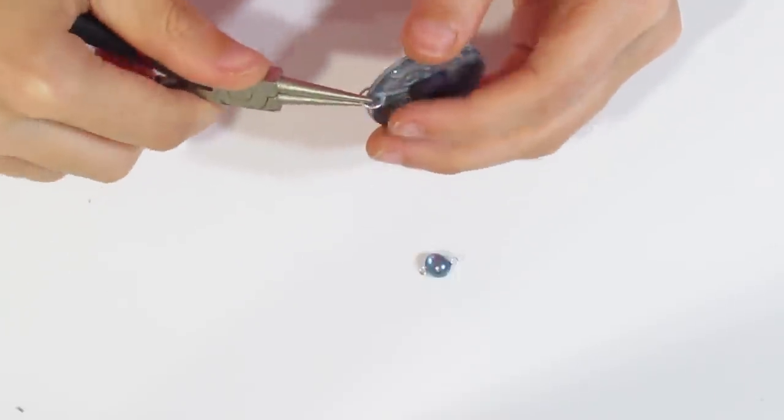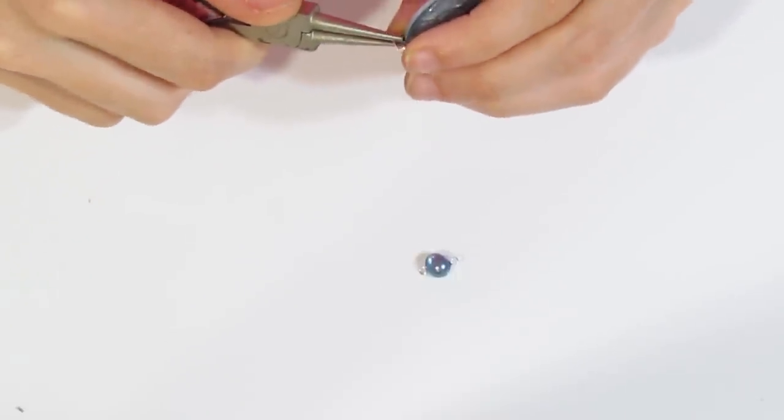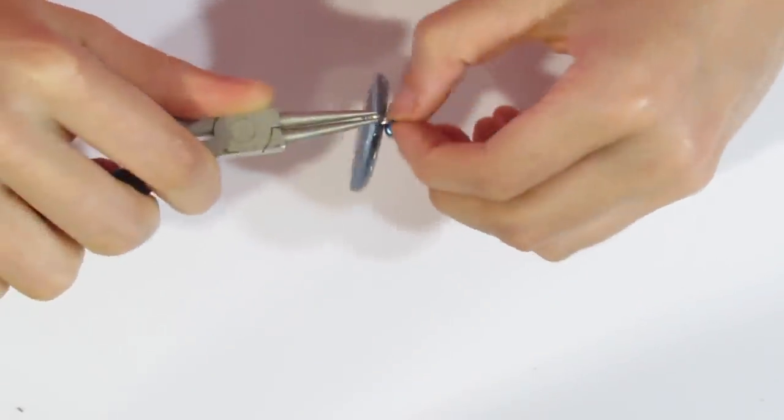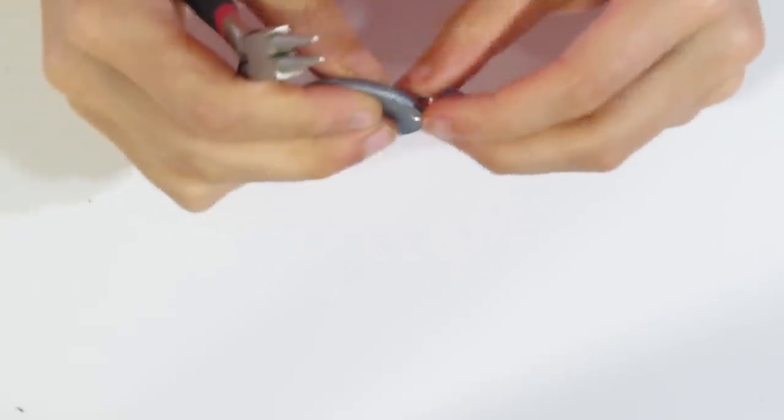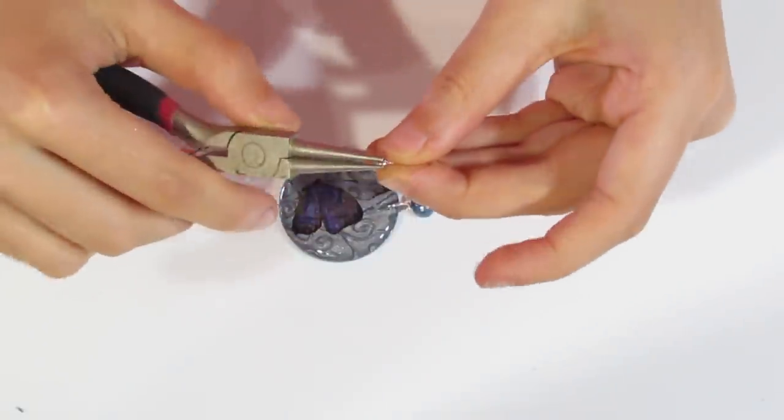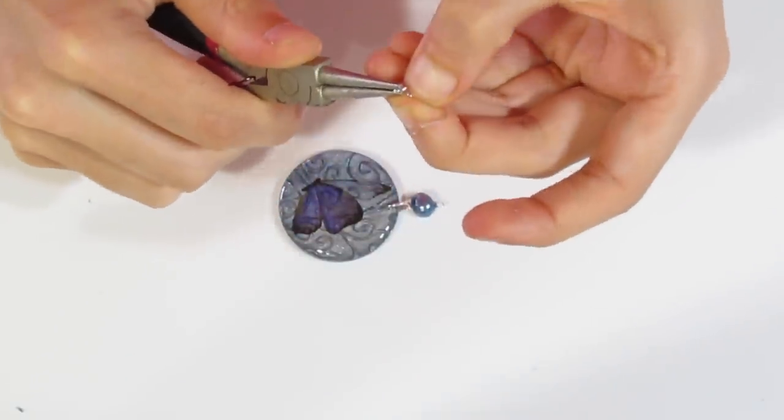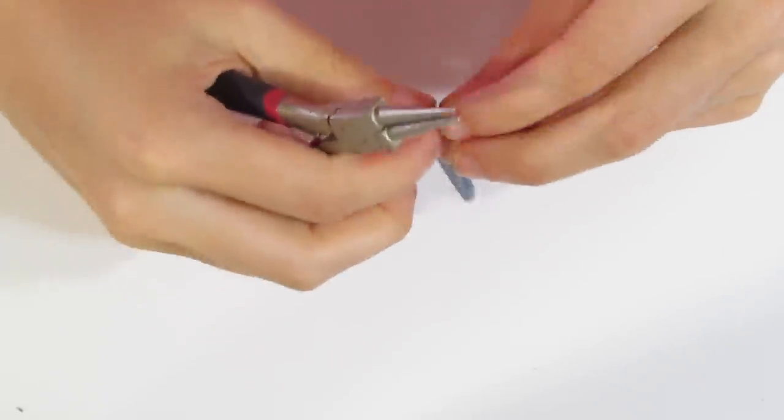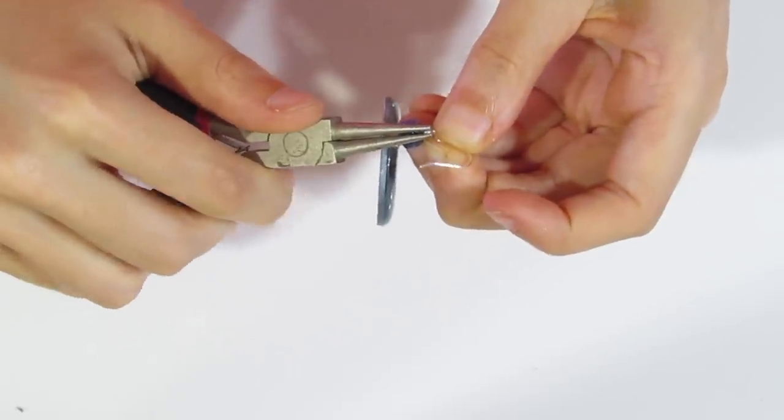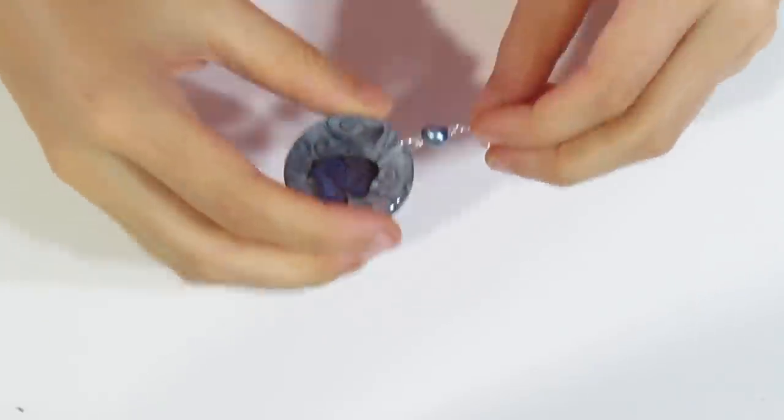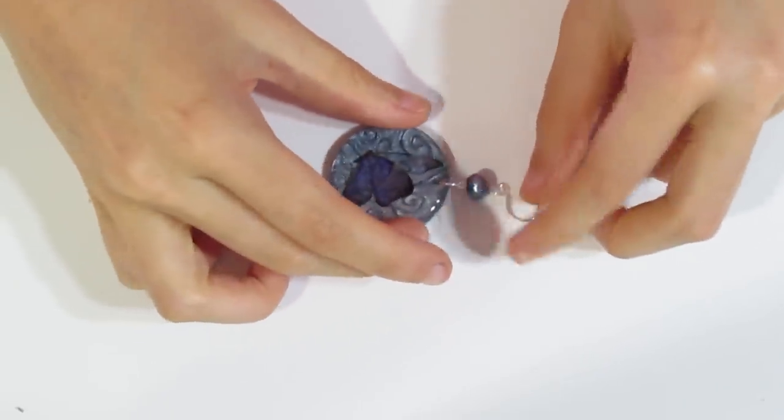Then grab a jump ring, open that up, attach the pearl, and then grab your ear wire. Just opening that up and attach that to the loop on the pearl. There we go, there's your earring.